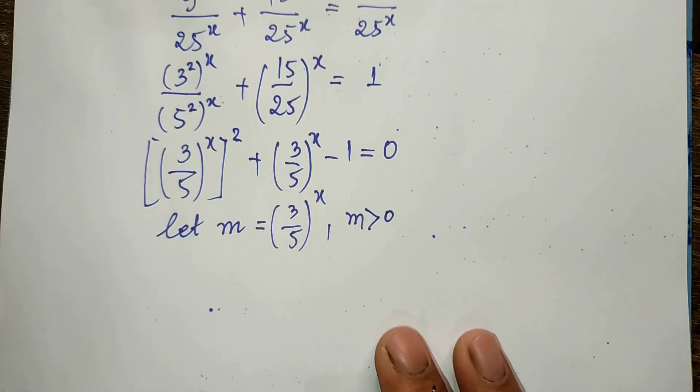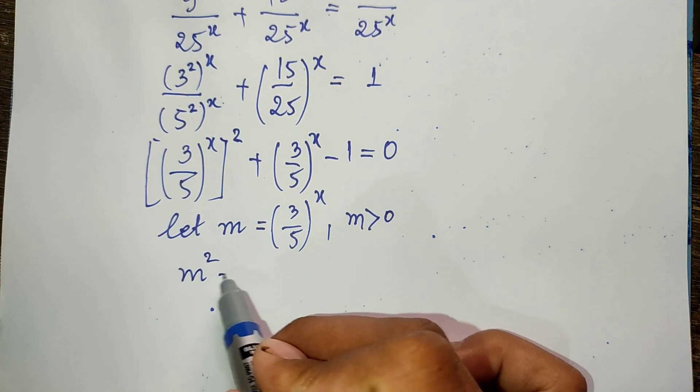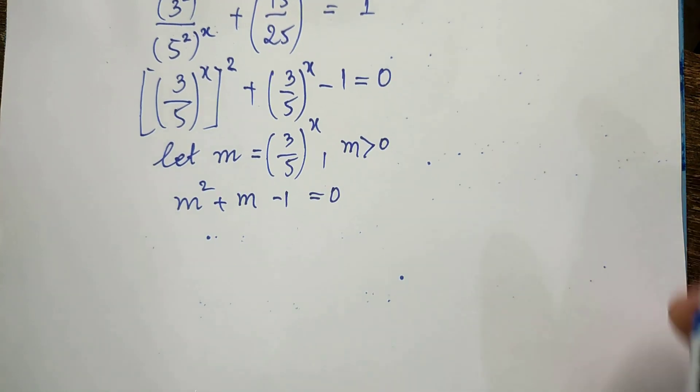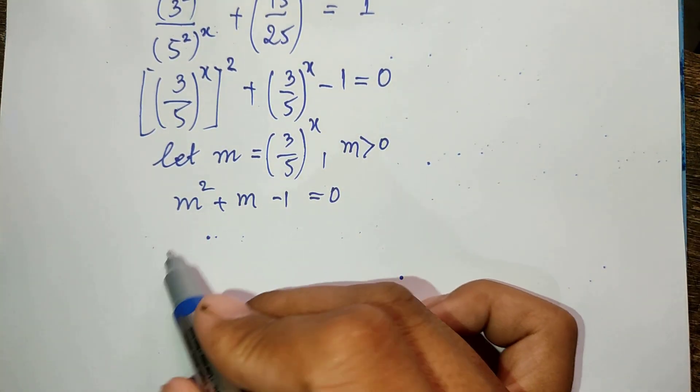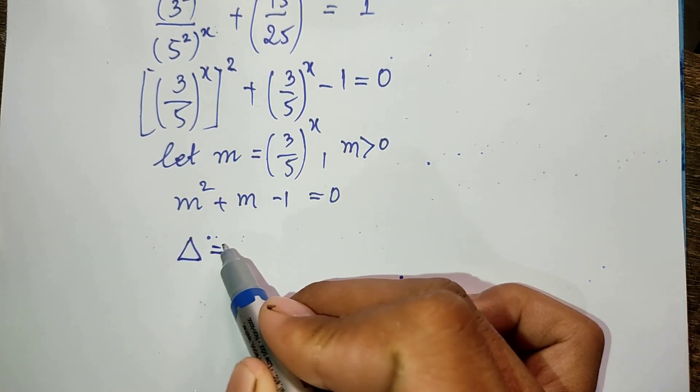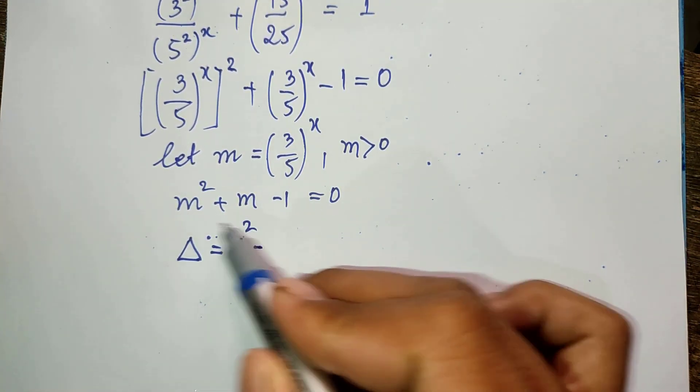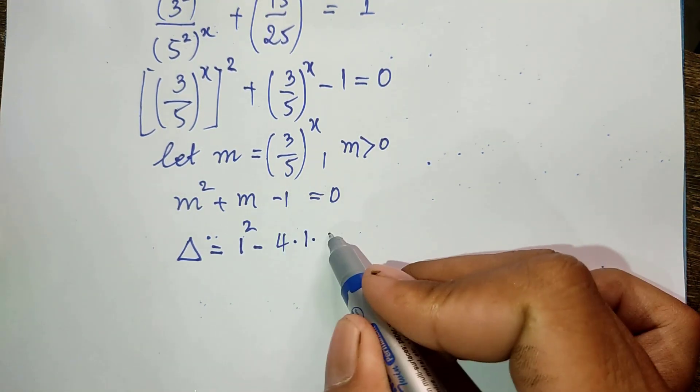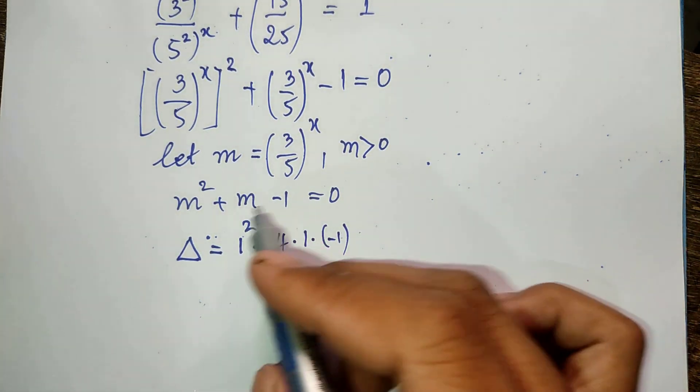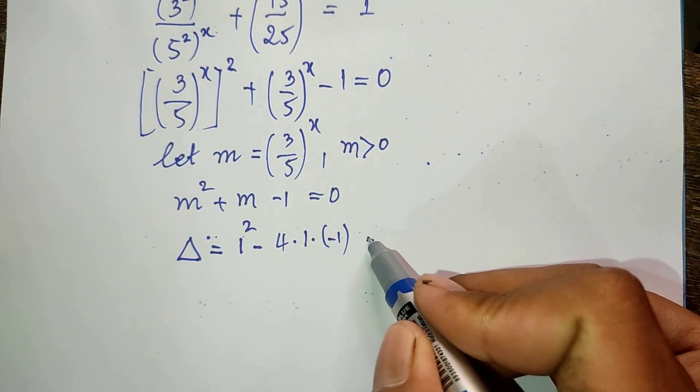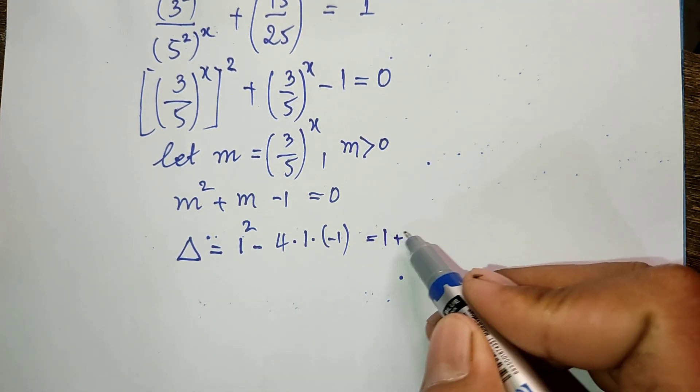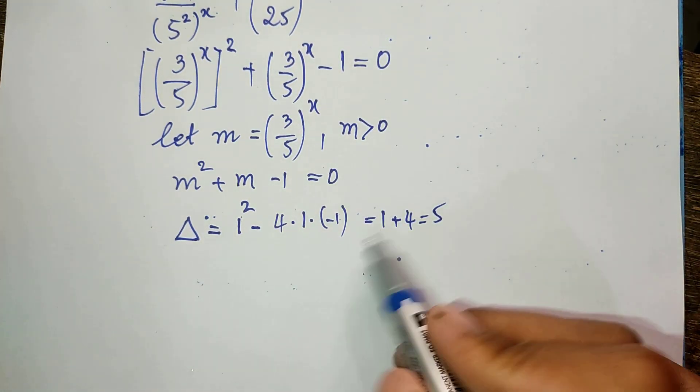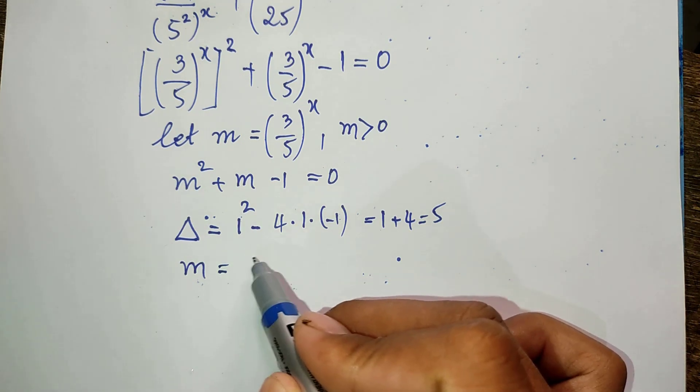From this we get m² + m - 1 = 0. Now we use the discriminant. Delta equals 1² minus 4 times 1 times (-1), so it equals 1 plus 4 which equals 5.